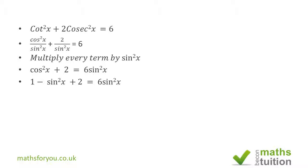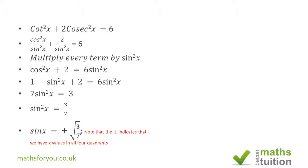If we take the minus sine squared x to the side that contains 6 sine squared x, we end up with 7 sine squared x is equal to 3. And when we divide both sides by 7, we have that sine squared x is equal to 3 over 7. If we then take the square root of both sides, we end up with sine x is equal to plus or minus the square root of 3 over 7.